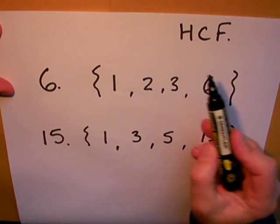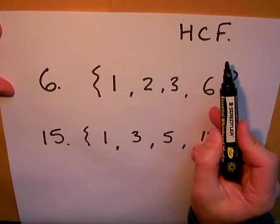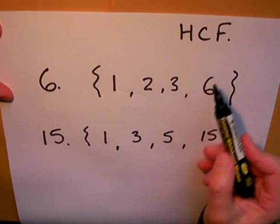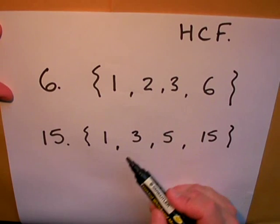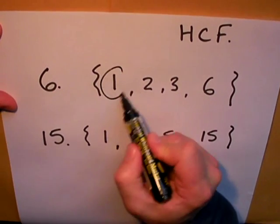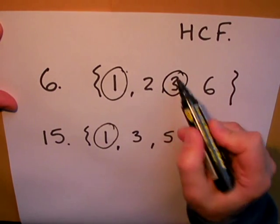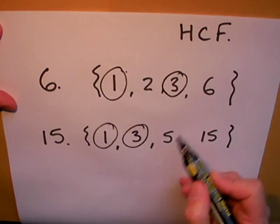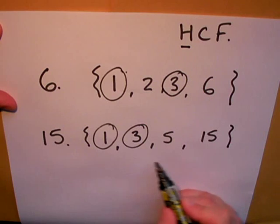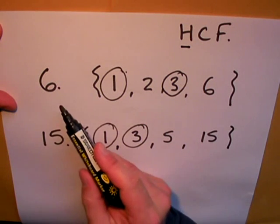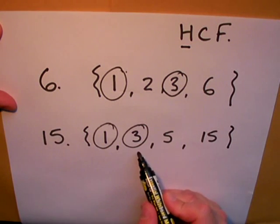Because I'm after the common factor, and in particular the highest common factor, I need to look at numbers that happen to appear in both lists. 1 appears in both lists and so does 3. Because I'm after the highest common factor, the highest common factor of 6 and 15 is 3.